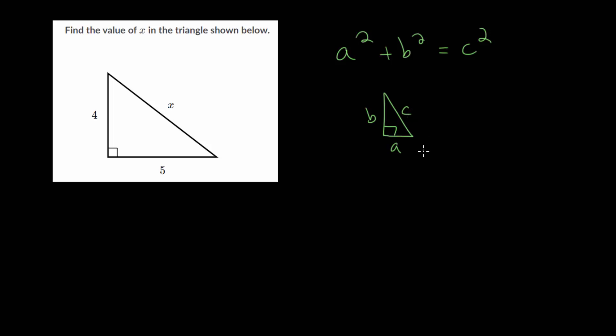So this theorem, this Pythagorean Theorem named after the Greek mathematician Pythagoras, will help us figure out a missing side length in a right triangle.